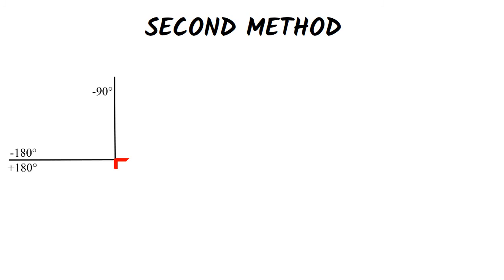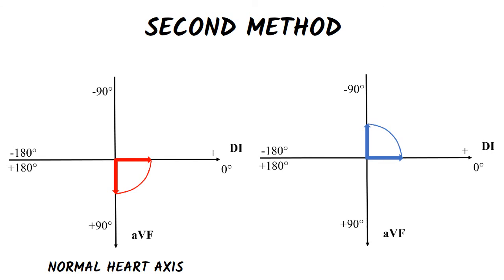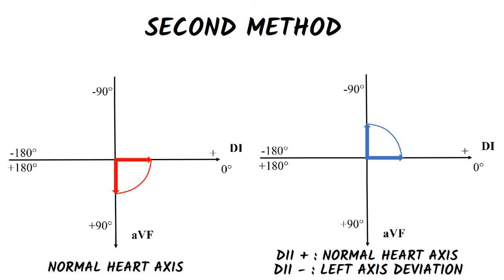If the QRS complex is positive in both lead 1 and AVF, it means the axis is somewhere between 0 and plus 90 degrees, so it is normal. If the QRS complex is positive in lead 1 and negative in lead AVF, it means the axis is somewhere between 0 and minus 90 degrees. In this case, we must also look at the QRS complex in lead 2. If it is positive, it means the axis is normal, and if it is negative, it means that left axis deviation exists.